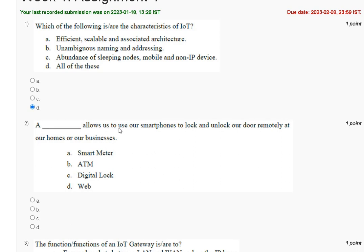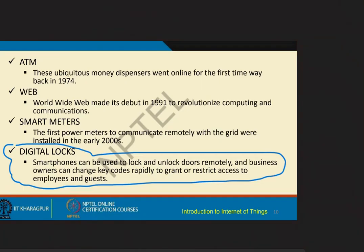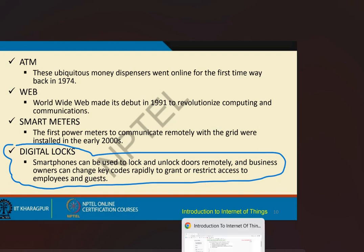Question two: which allows us to use our smartphone to lock and unlock our door remotely at home or business? Options are: first, smart meter; second, Atium; third, digit lock; fourth, Wave. The explanation is that a digit lock allows a smartphone to lock and unlock a door remotely, and a business owner can change the key code. The correct answer is option C, digit lock.